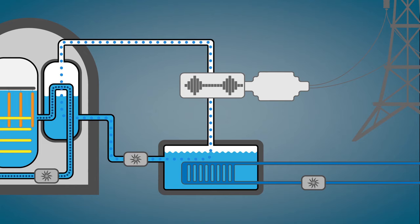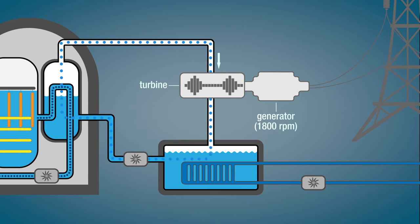Once high-pressure steam is produced, nuclear plants and fossil fuel plants generate electricity in much the same way. Steam is passed through a turbine which spins a generator, in this case at 1800 rpm, and electricity is sent to the grid.